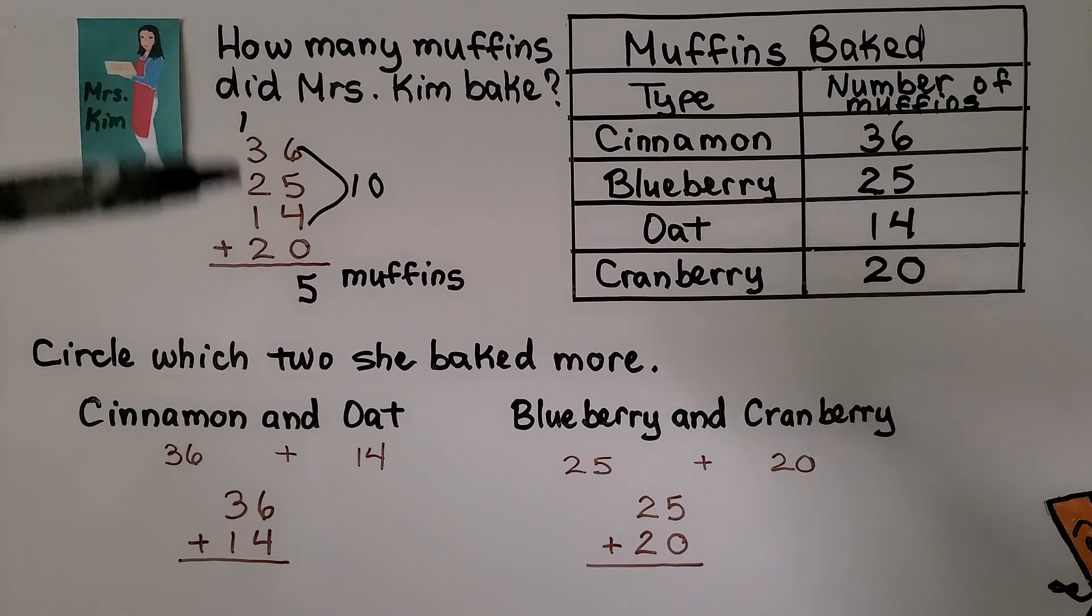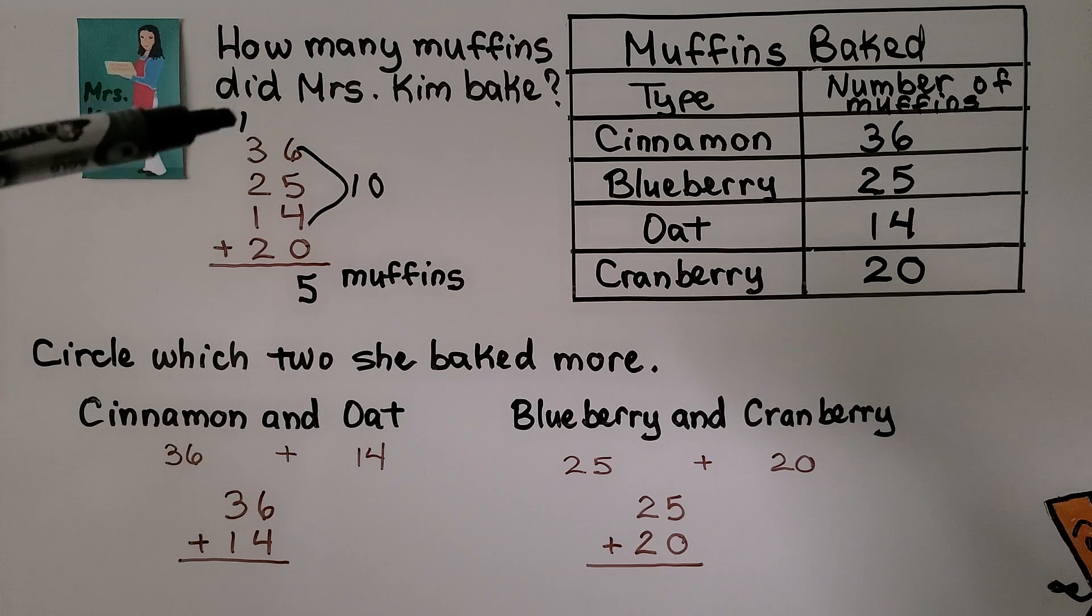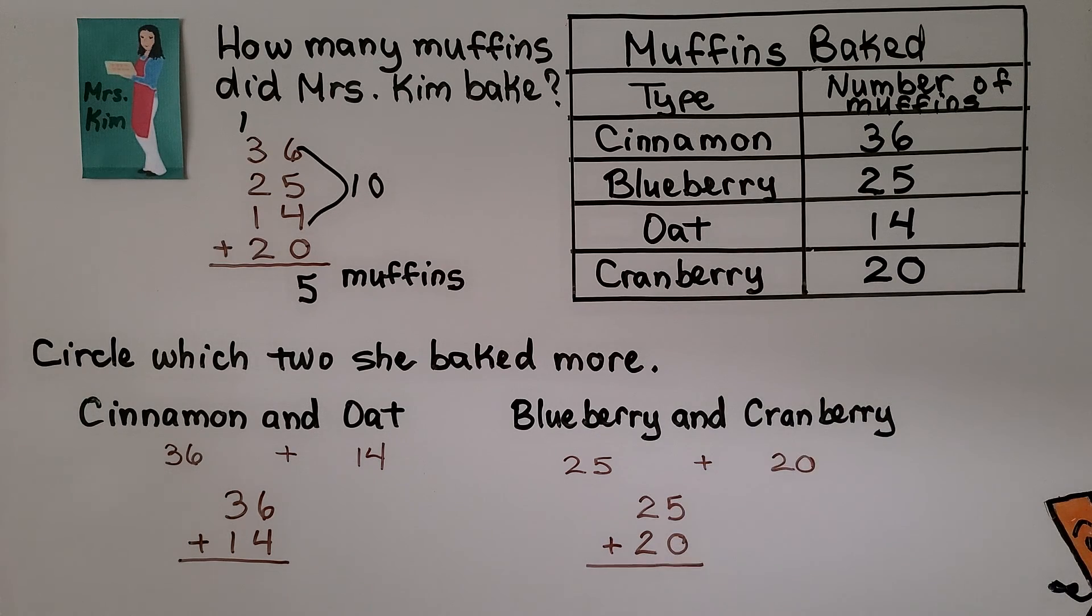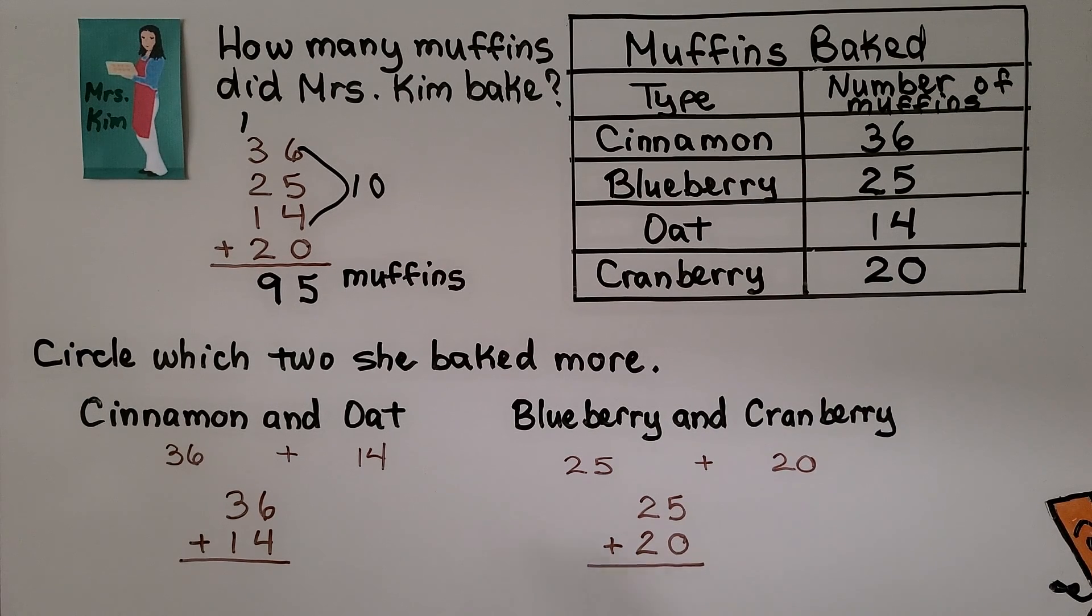Now we add the tens column. We have 3, 4, 5, 6, 7, 8, 9. 9 tens, 5 ones. That's 95 muffins.